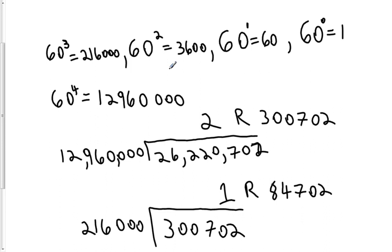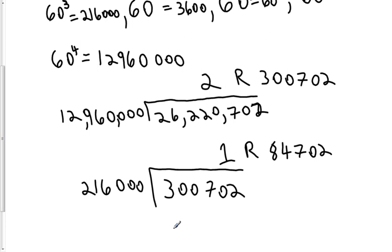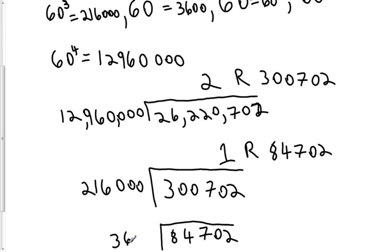And we're going to take the next place value down, which is the 3600 place, and we're going to see how many times that goes into the remainder here. So we're going to take that 84,702 we just found as the remainder and divide it by 3,600. It turns out that goes in 23 times, and the remainder upon division is 1,902.